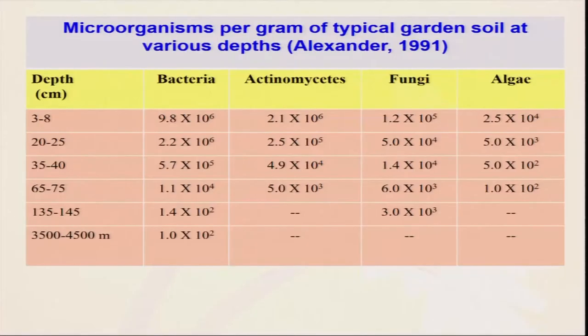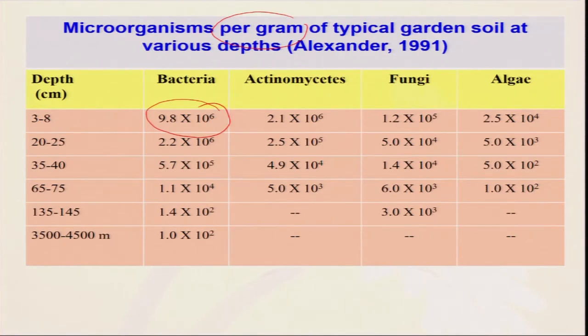If we look at how many microorganisms exist in garden soil, you will be amazed to know that in just a typical garden soil at a depth of 3 to 8 centimeters, per gram of soil there are about 9.8 × 10⁶ — that is about 90 lakhs to 1 crore bacteria present in only 1 gram of soil. Similarly, there are actinomycetes, about 12,000 fungi, and algae all existing within 1 gram of soil. Our soil is a reservoir of bacteria, actinomycetes, fungi and algae. However, most of these microbes are not beneficial — some may be harmful, and for many we do not yet know their role, as our science has not yet determined the function of many existing bacteria and protozoa.